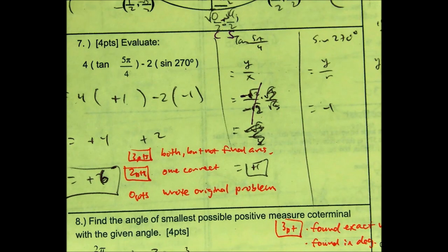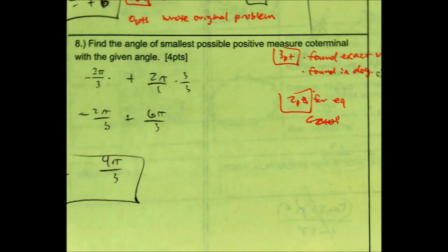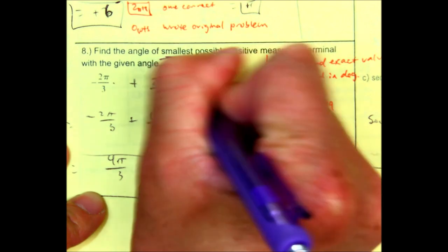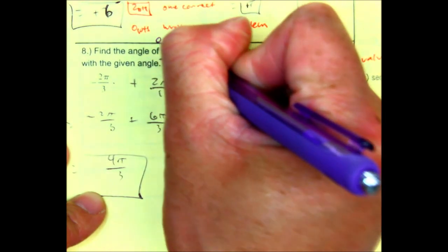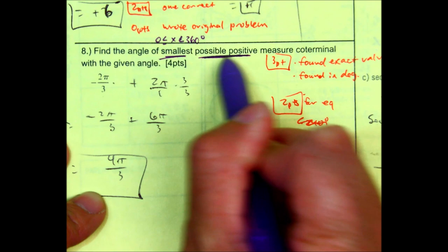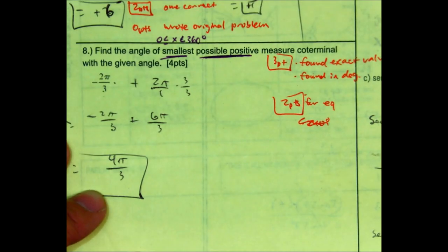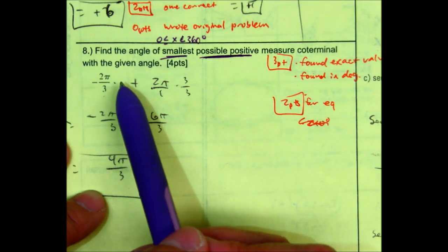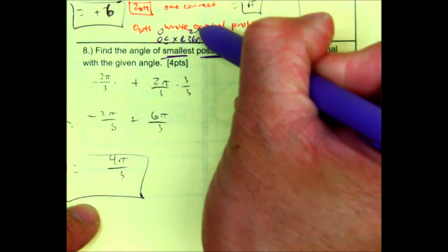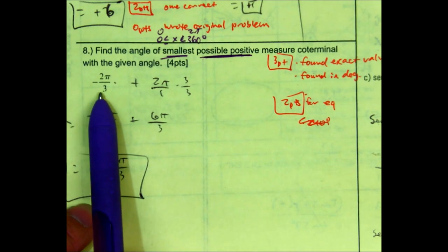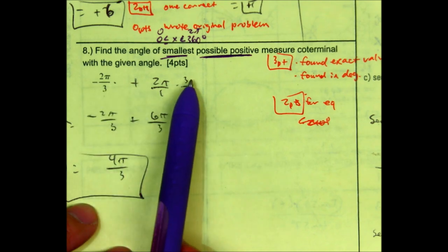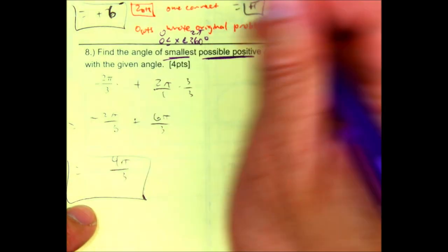Question number 8. Find the angle of smallest. So when you think of the word smallest, think of a number between 0 and 360. Possible positive measure of coterminal with a given angle. So here, I'm not just adding or subtracting. I'm not having two answers. I'm trying to find a number that's between essentially 0 and 360 or 0 and 2 pi. I have negative 2 pi over 3. One equation I gave you guys was blank plus blank times n, or number of rotations.